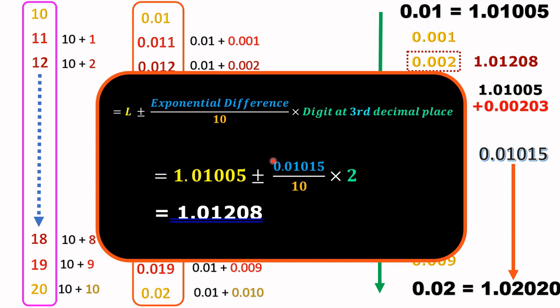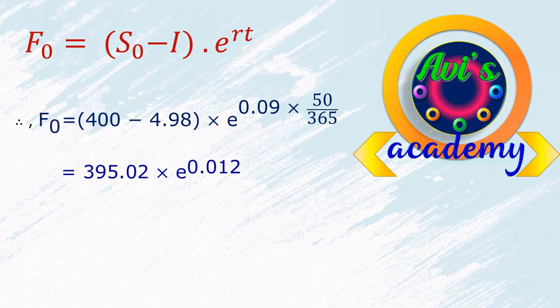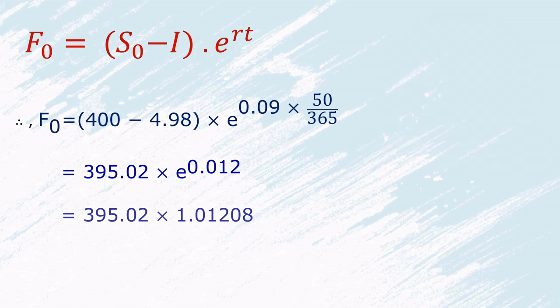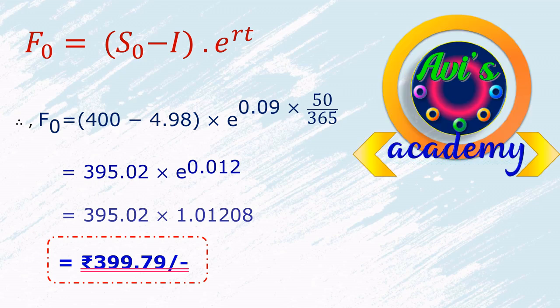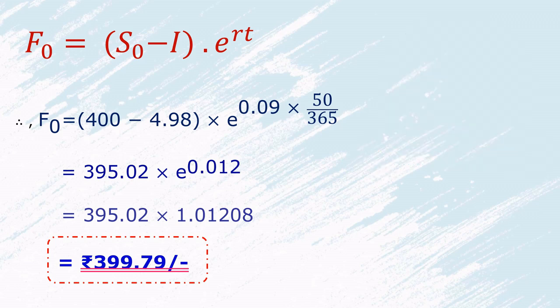Multiplying the values together: F₀ = 395.02 × 1.01208 = rupees 399.79. This is the value of the forward or futures contract on equity when we know the income derived from the underlying asset. This completes Illustration 2 — valuation of a futures contract when the security provides known income. Thank you everyone for watching this video.